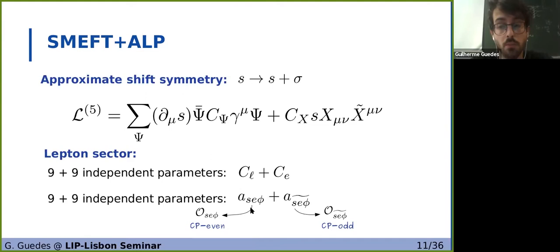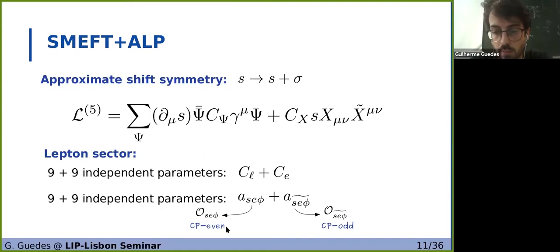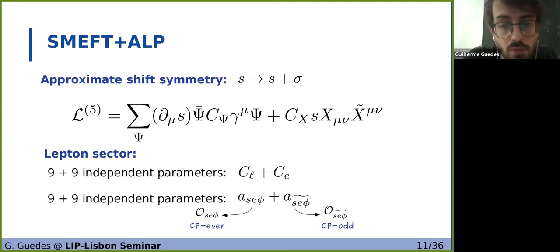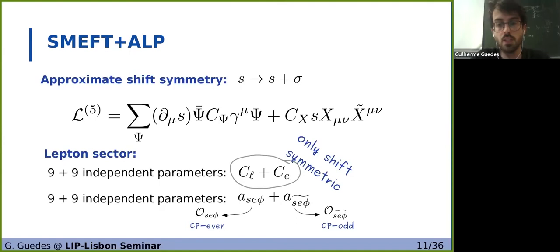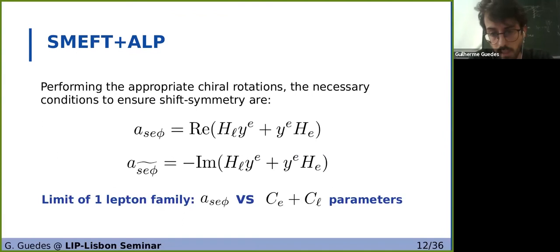In our basis, the Yukawa-like operators come with real matrices, so we will have nine parameters from the CP even Yukawa-like operator and another nine from the CP odd operator. So everything seems fine — we have 18 parameters in both bases, and they seem to be equivalent. However, when we look at the derivative basis, we immediately see that it can only represent shift-symmetric operators by definition, whereas the Yukawa-like operators can represent both shift-symmetric and shift-breaking operators. So with the same number of parameters, our basis can reproduce more operators, making it the more minimal one.